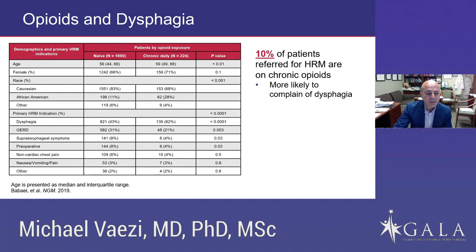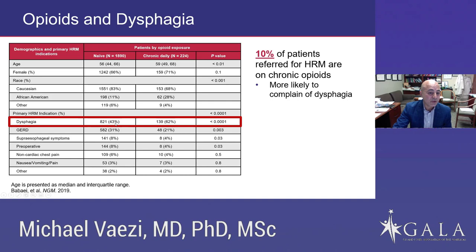Dr. Babayi published a study in 2019 on a large group of more than 2,000 patients, dividing the population into opioid naive versus those on chronic use of opioids. He found that dysphagia was the predominant symptom differentiating the two. Patients on opioids are more likely to present with dysphagia, which results in performing endoscopy as well as potentially esophageal motility testing.